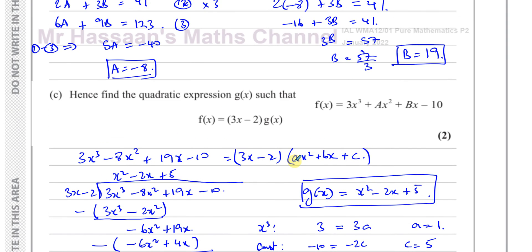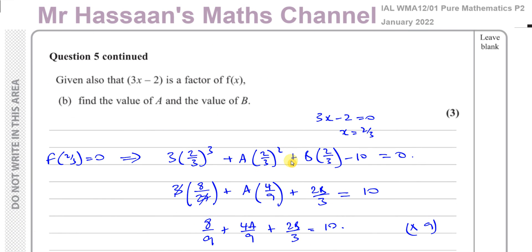That completes question 5, parts a, b, and c, from the January 2022 P2 paper. Topics covered include the factor theorem, remainder theorem, and algebraic long division. Other questions from this paper and from this topic can be found in the playlist and links shown on screen. Thank you for watching and see you soon.